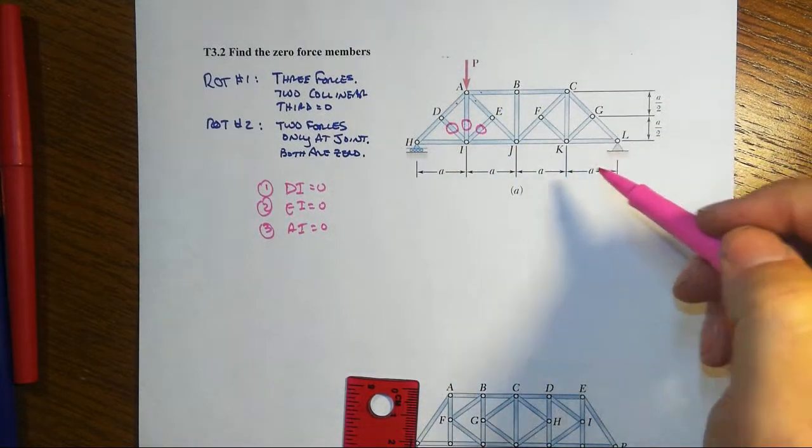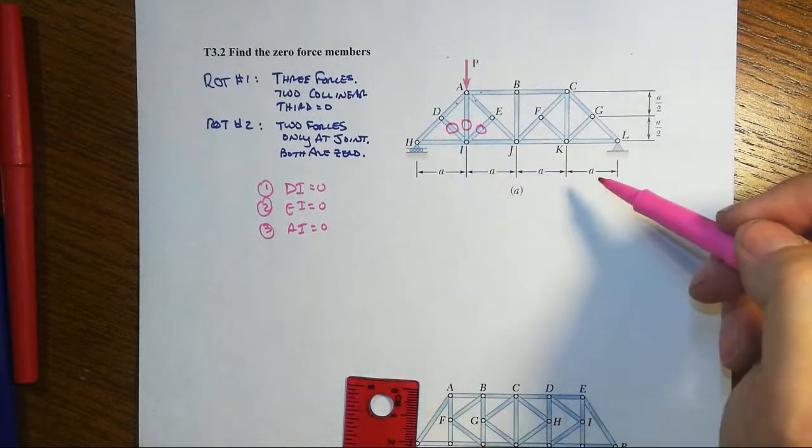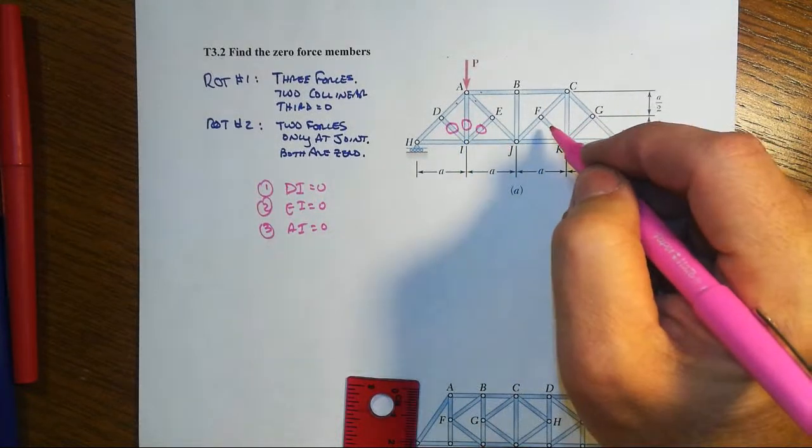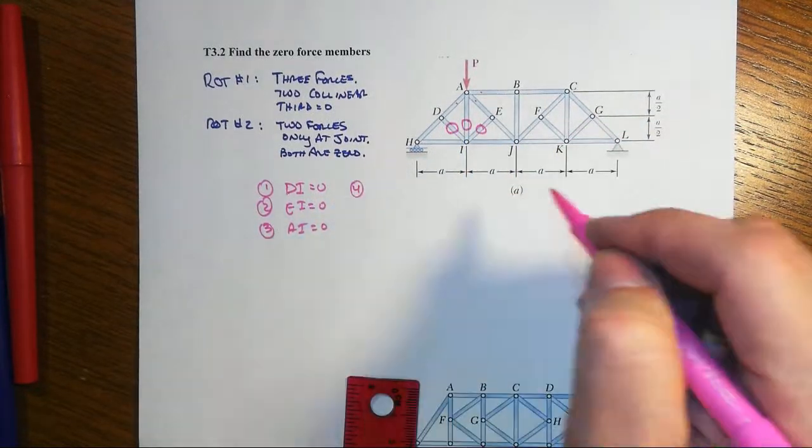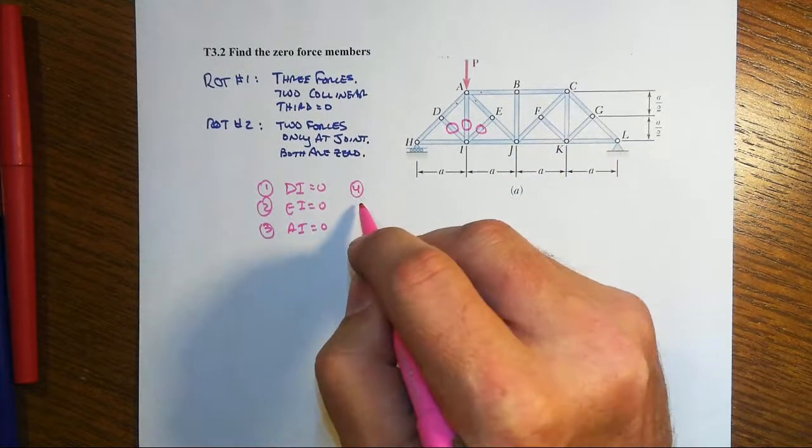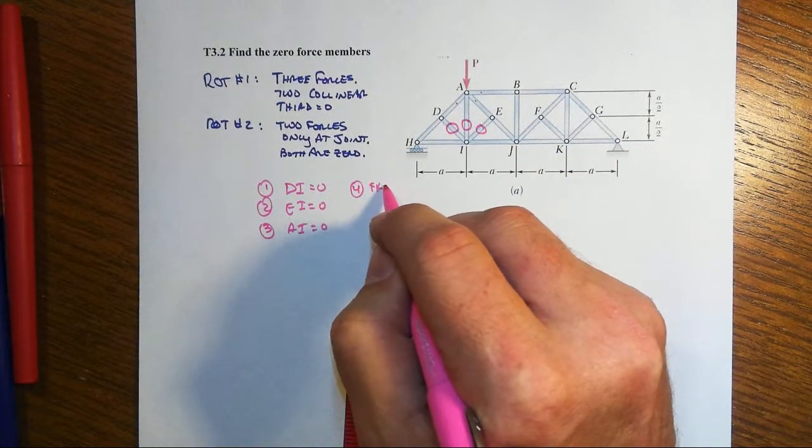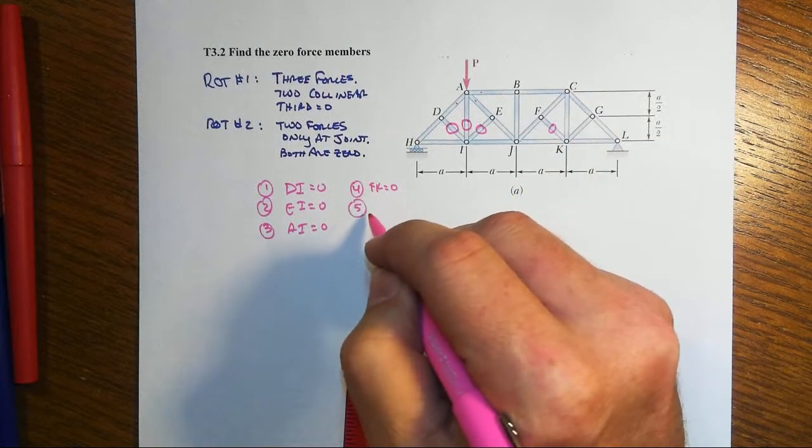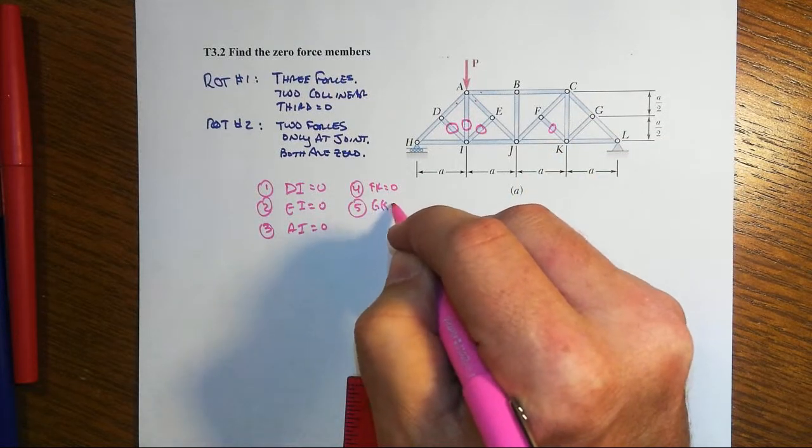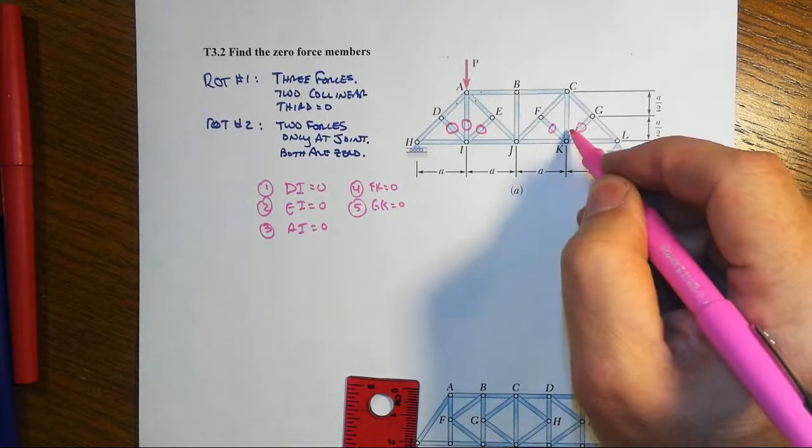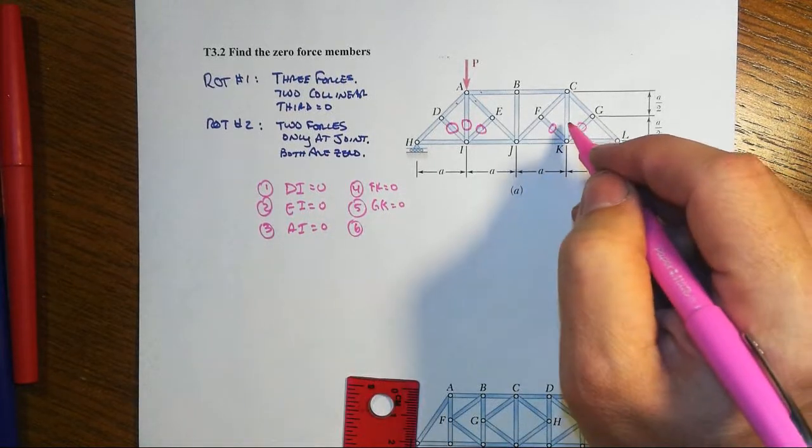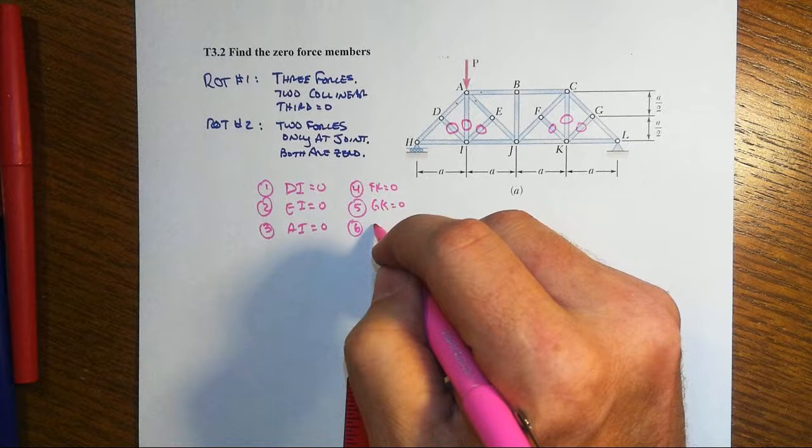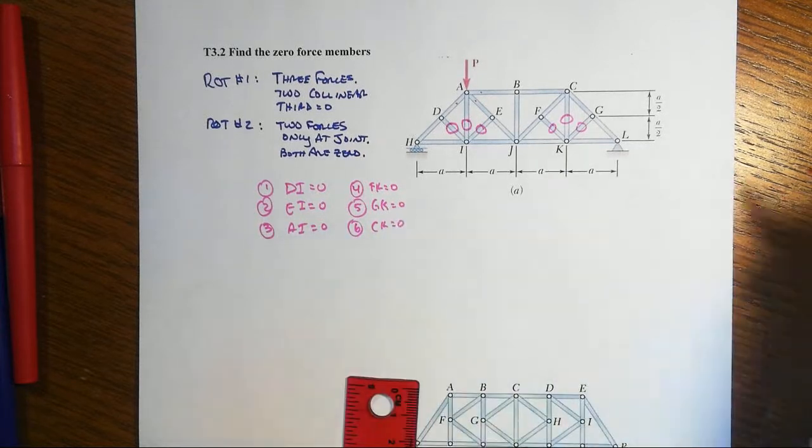So we're actually still okay there. Then you say, well, if that's the case over here, don't we have something similar over here? And you betcha we do. Go to joint F, and you then prove that FK equals zero. Go to joint G, and GK will be zero. Then you can go to K, and that makes CK equal to zero.